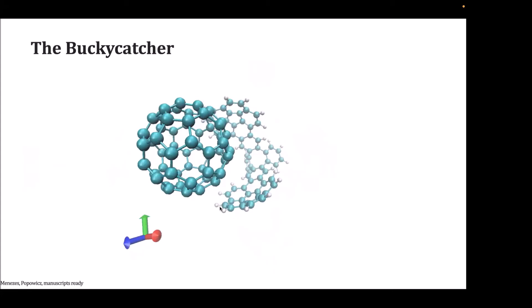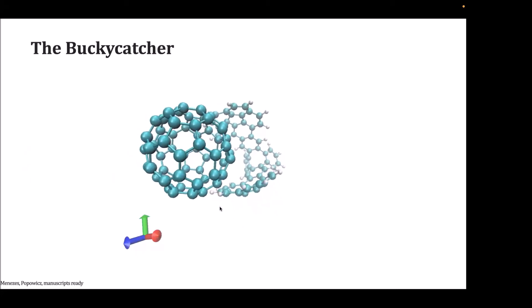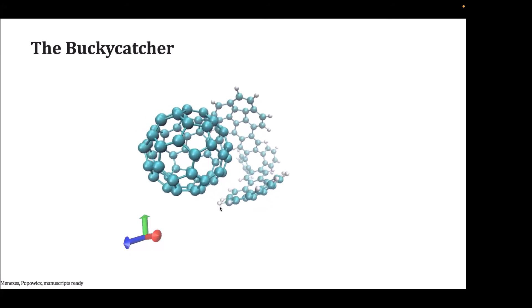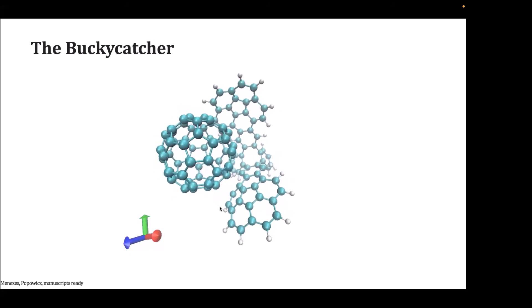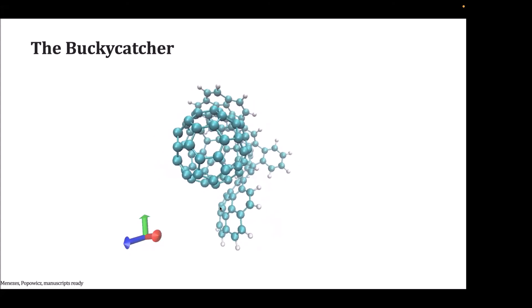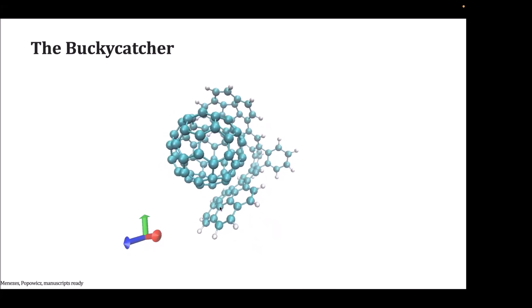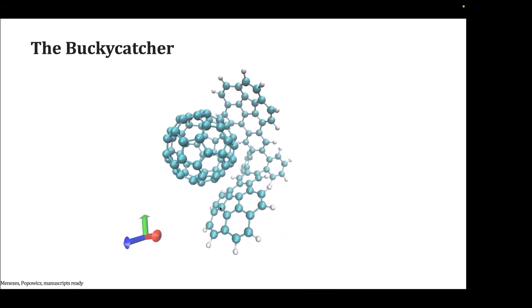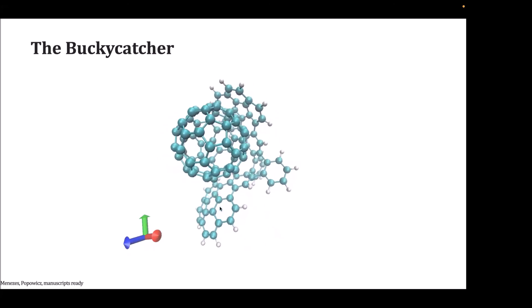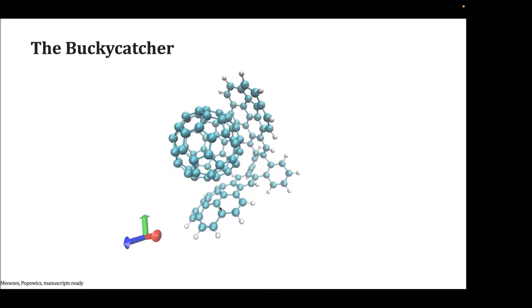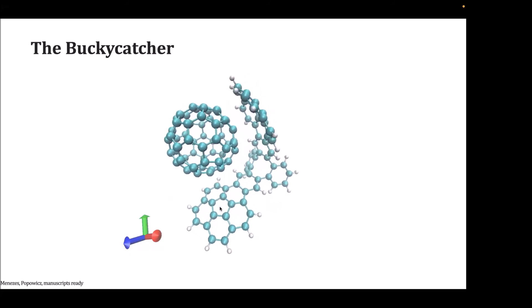Semi-empirical is economical. I can run molecular dynamics. I took the buckycatcher, put the fullerene on top, and let them interact. The fullerene goes to the side, waits for the arms to open, then jumps in. This process is barrierless. I spent days looking for the transition state. Everything failed because there is no barrier. After the complex forms, it stays stable over time.